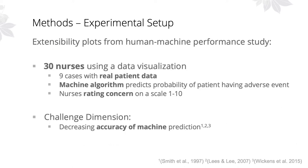We've now piloted our extensibility plots method with data from one of our recent human-machine performance studies. Thirty practicing nurses were shown real de-identified patient data from nine cases using a data visualization, and we asked them to rate their concern on a scale of one to ten. This display also included a machine learning algorithm that simultaneously predicted the probability of the patient having an adverse health event. We then calculated performance for both the machine accuracy and nurse concern by comparing against whether or not the patient actually had an adverse health event. We considered the decreasing accuracy of the machine prediction to be increasing challenge to the system, which is consistent with other studies of human-machine teams that observed negative performance effects when the machine presents an incorrect prediction.